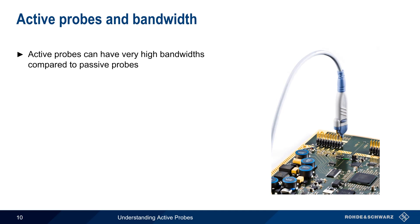On average, active probes have much higher bandwidths than passive probes. While most passive probes have bandwidths in the range of tens or hundreds of MHz, active probes often have bandwidths well into the GHz range.